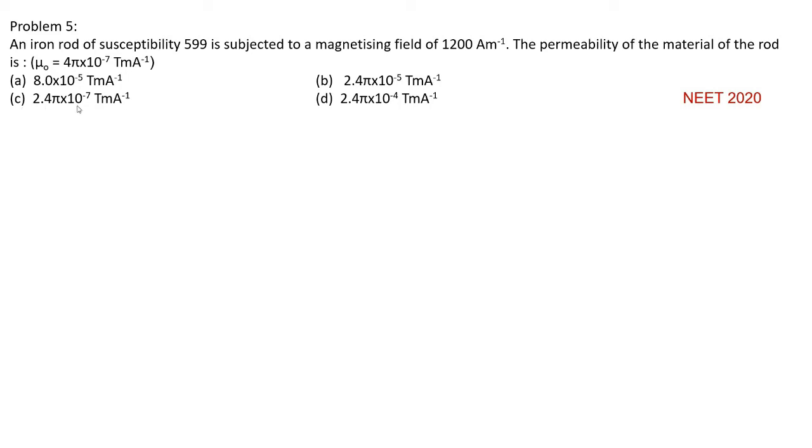Option C, 2.4 pi into 10 to the power of minus 7 tesla meter per ampere. Option D, 2.4 pi into 10 to the power of minus 4 tesla meter per ampere. NEET 2020.